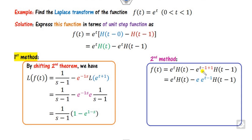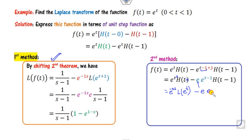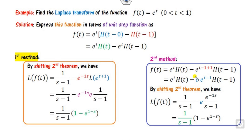Second method for the exponential example: expand the expression in terms of (t − 1), since e^t = e^{(t−1)+1} = e · e^{t−1}. Factor e as a constant outside. By the second shifting theorem, L{e · e^{t−1} · h(t−1)} = e · e^{−s} · L{e^t} = e · e^{−s} · 1/(s−1). Both methods confirm the same answer.